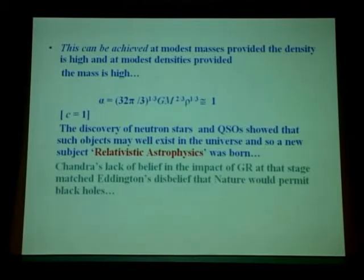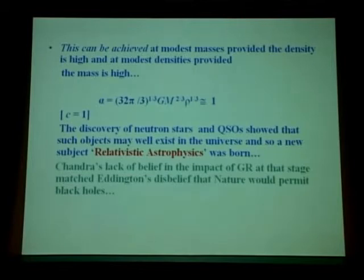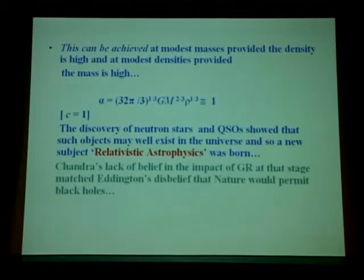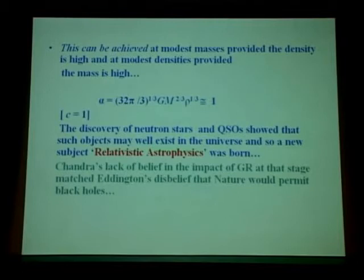Chandra's lack of belief in the impact of general relativity at that early stage matched in a sense Eddington's disbelief that nature would permit black holes. You remember the controversy between Chandra and Eddington — Eddington felt that nature should not allow such objects as black holes, without naming them as such. In a somewhat similar way, Chandra also felt that strong gravitational field objects may not exist.